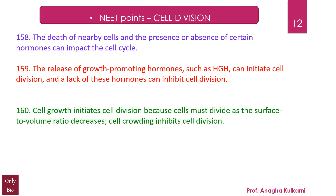Point number 160: Cell growth initiates cell division because cells must divide as the surface-to-volume ratio decreases. Cell crowding inhibits cell division.